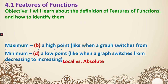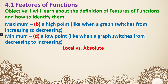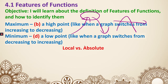A few more definitions: maximum and minimum. Maximum means a high point on the graph. For example, if a graph is increasing and then decreasing, that turning point is the maximum. Minimum is the opposite: when the graph is decreasing and then going up, that gives us a low point, which is the minimum.